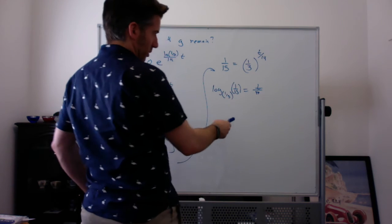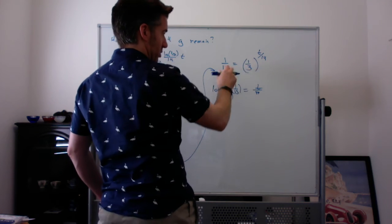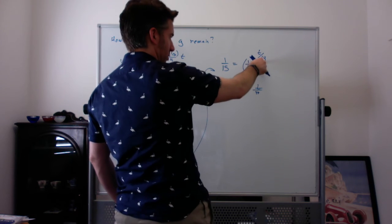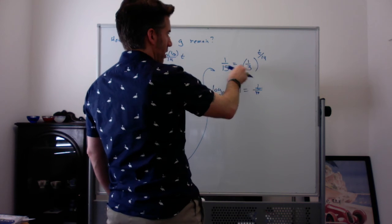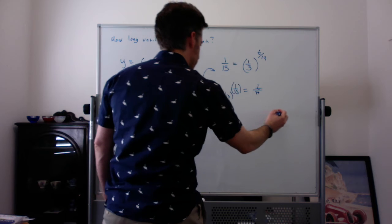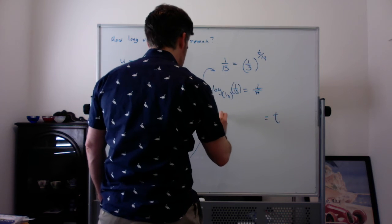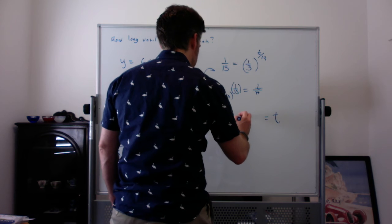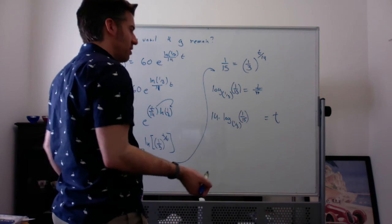I think the base is 1/3 of the power of t over 14. So you say log base this of this equals the power. And then you can solve for t and say t equals 14 times log base 1/3 of 1/15. So it's kind of a funky way of doing it.